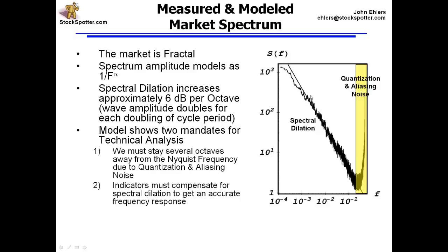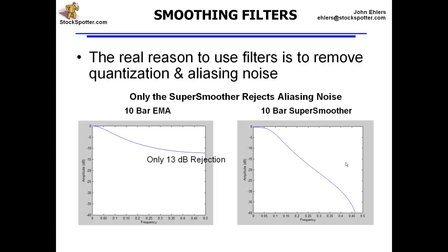Not only do we have to filter out the quantization and aliasing noise, but since the spectrum is growing with cycle period, the spectral dilation means we also have to compensate for that growth. Otherwise, the longer cycles are going to overwhelm the swing of our shorter cycles, and we have to take that into account in our indicators. So let's look at smoothing first.